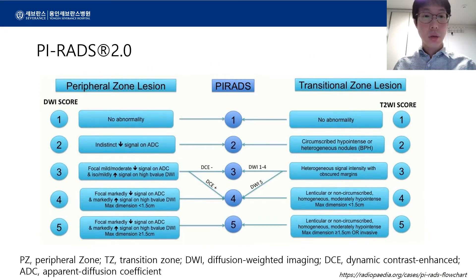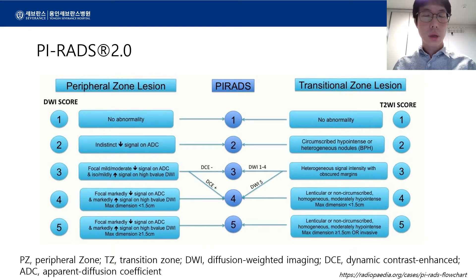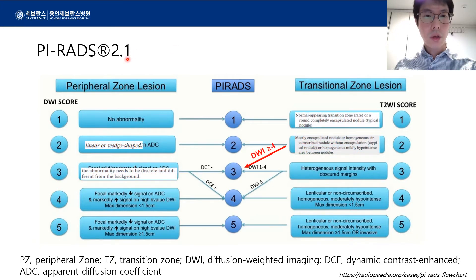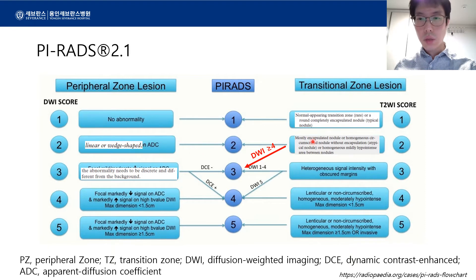This slide shows how the lesions are categorized. Lesions in the peripheral zone are scored according to the diffusion-weighted image, and lesions in the transitional zone are scored according to the T2-weighted image. In the upgraded version 2.1, a few statements have been modified to improve standardization. Category 2 lesions in the transitional zone can be upgraded to Category 3 if the diffusion-weighted image shows a score greater than 4.